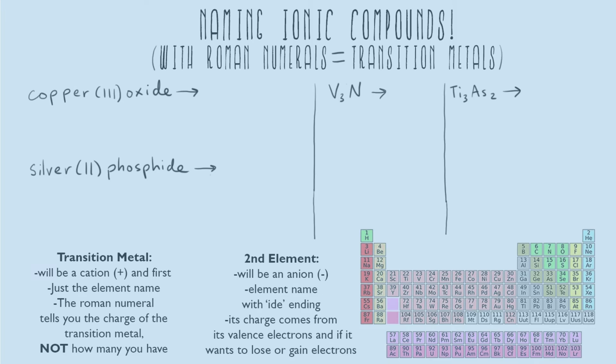In this video, I'll be going over naming ionic compounds that have Roman numerals, which means we're dealing with transition metals. When we have an ionic compound, we have a metal and a non-metal, and anytime you see Roman numerals, it means your metal is a transition metal — that part of the periodic table where we cannot predict its valence electrons. The first two columns on the left and the last six on the right we can predict, but everything in between we don't know exactly how many valence electrons it will have, so we don't know what type of ion it makes.